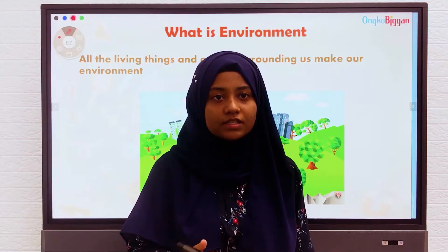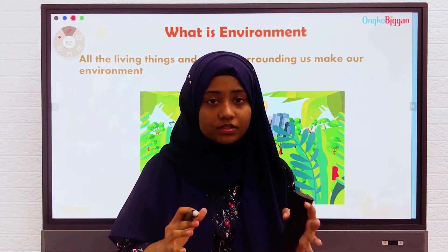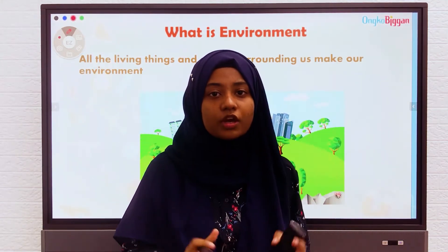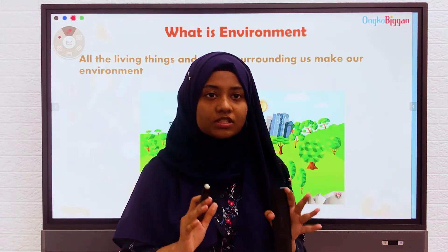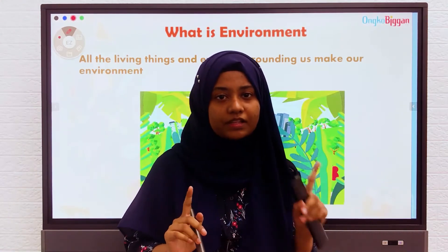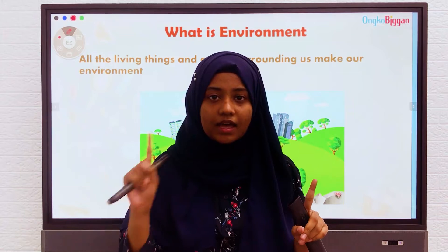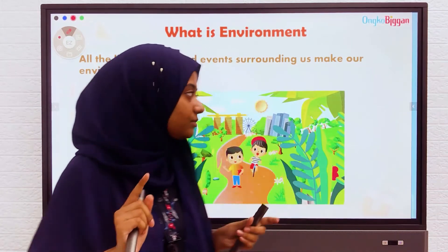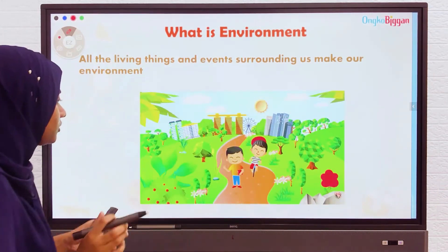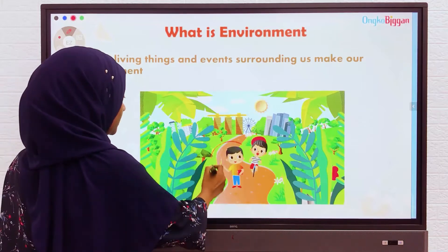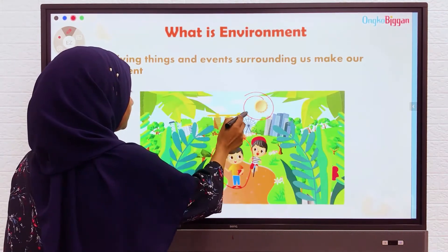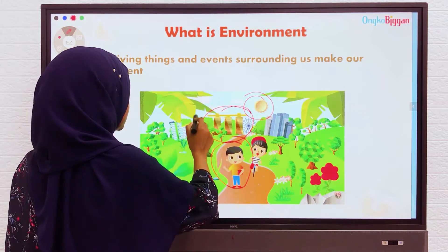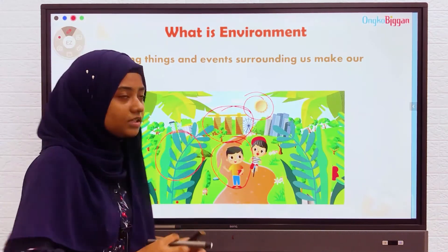Some things together have to make our environment. Our environment is divided into two things: living things and non-living things. Let me now show you what makes our environment — humans, the sun, non-living things, buildings, trees — all these things make our environment.